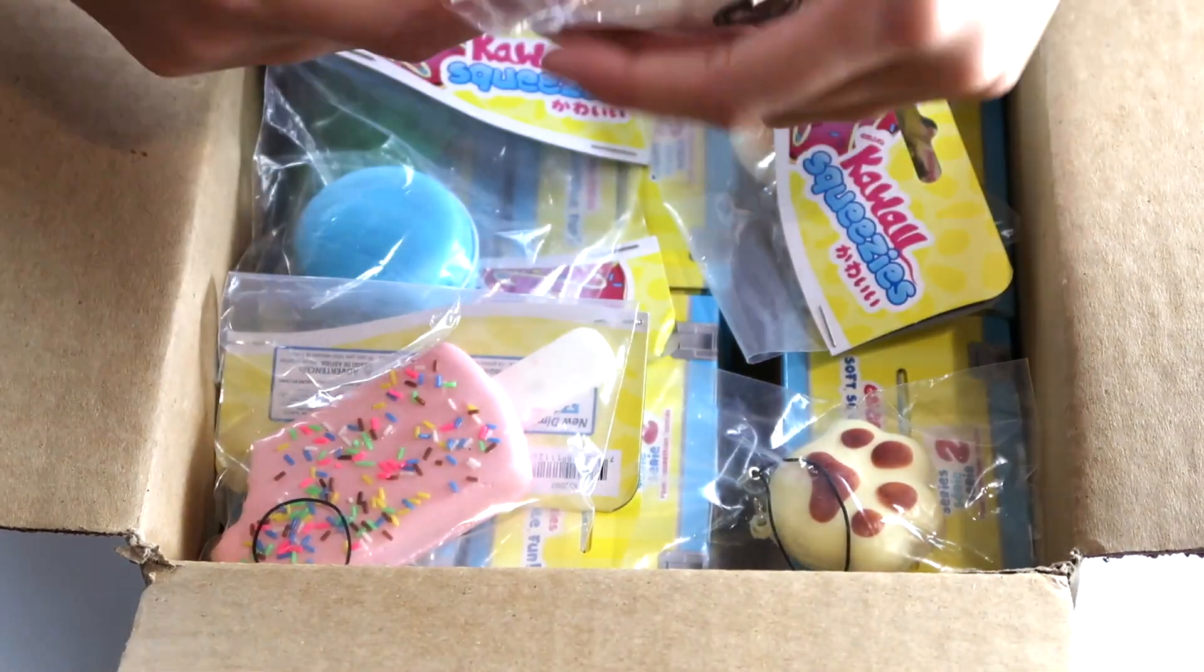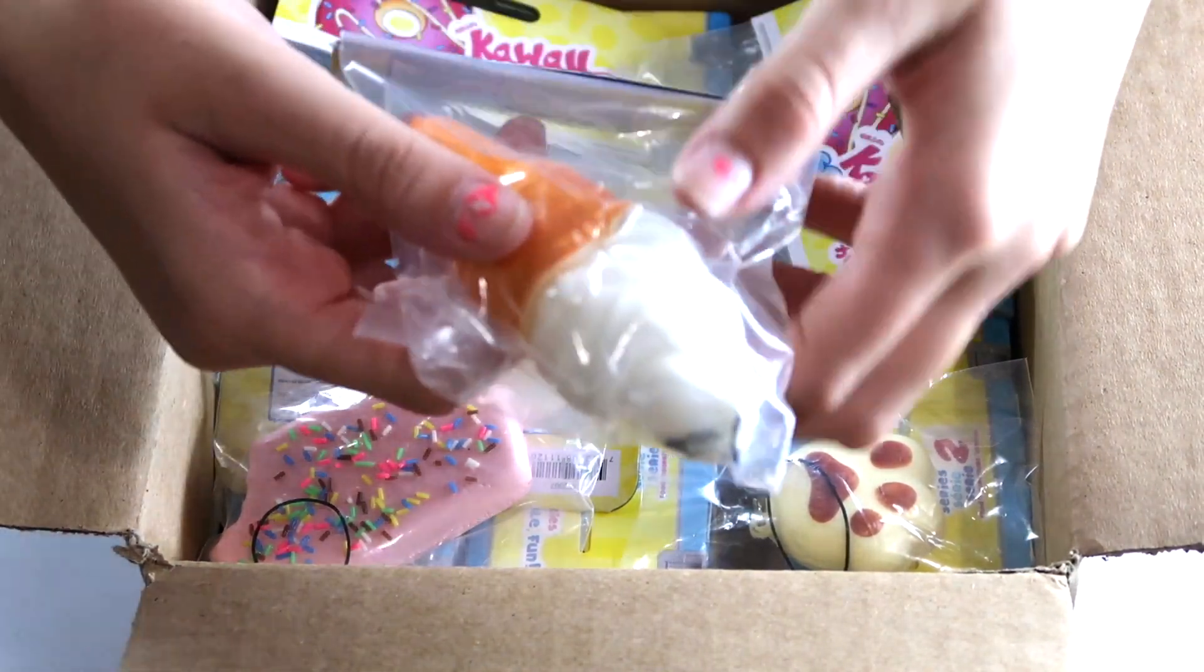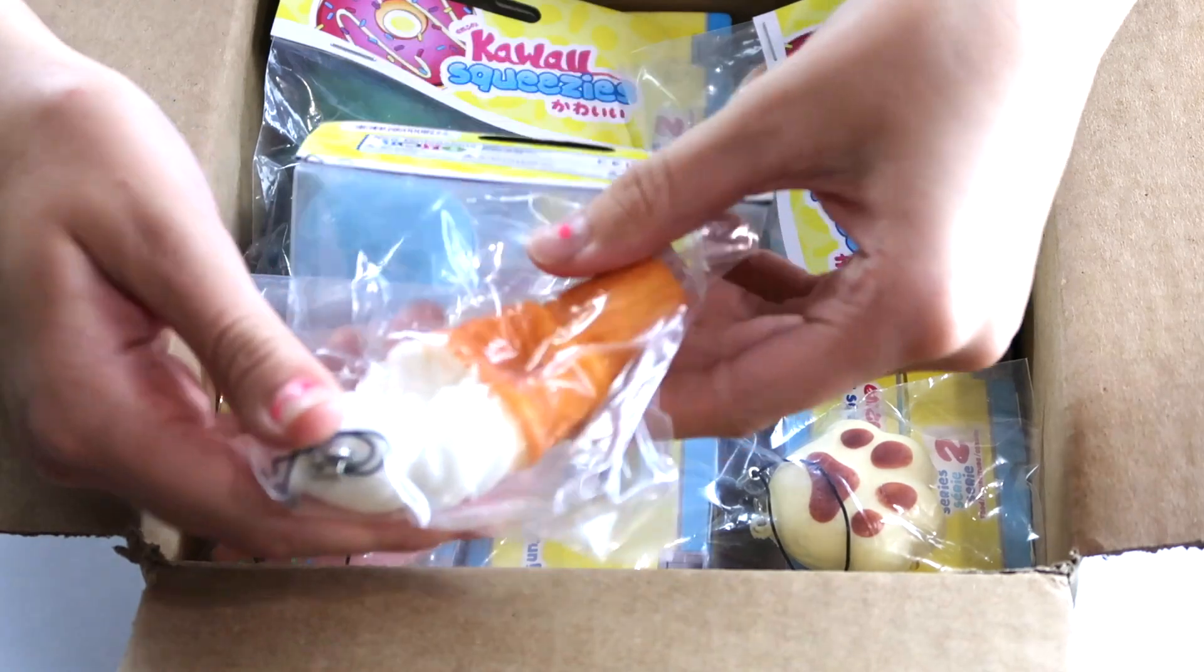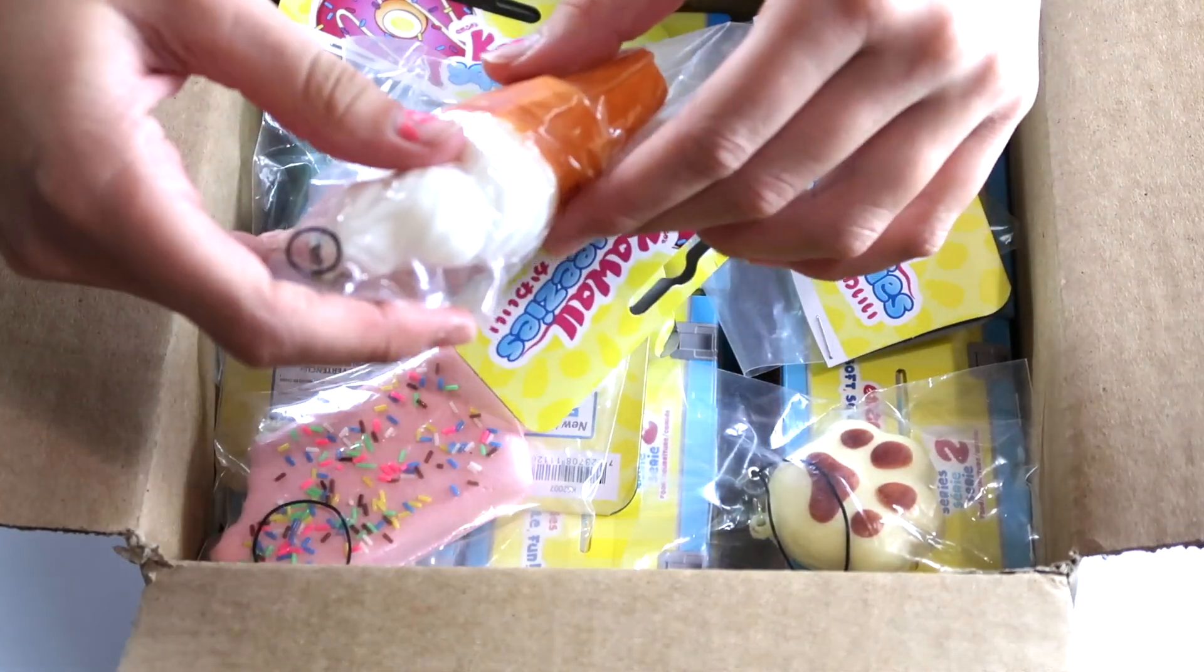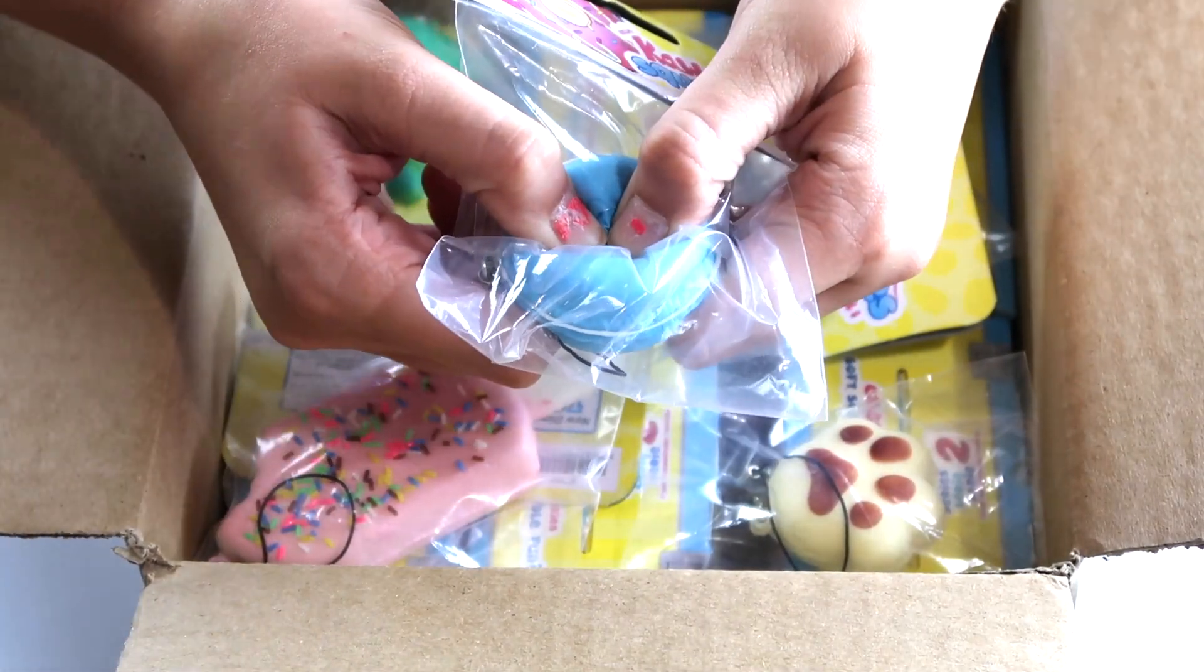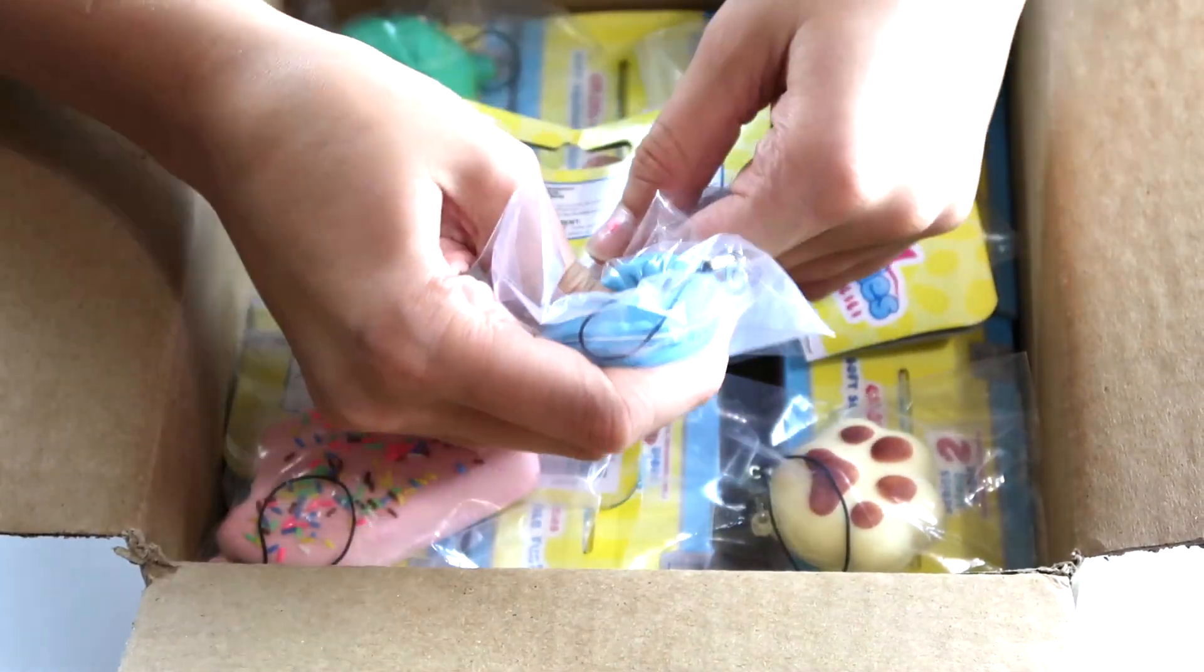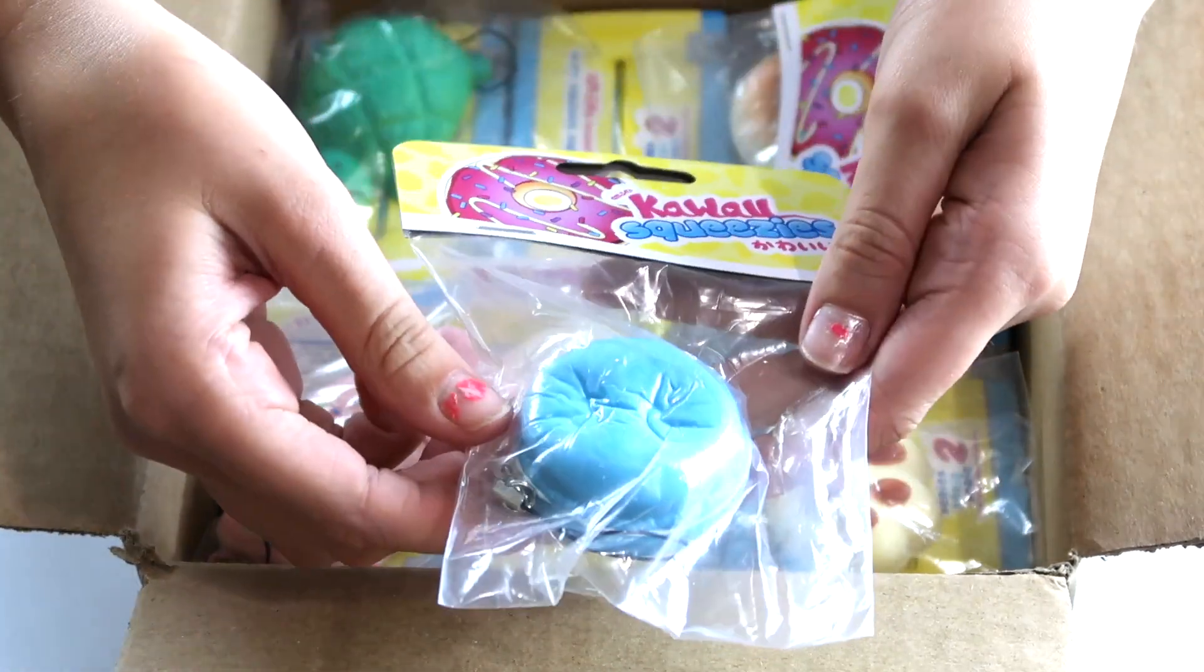But the first one out of the series 1 is a vanilla ice cream. They are super soft and slow rising, except these ones aren't blind boxes. These ones you can just see and choose which one you want, which is a good thing. But this one is super soft and slow rising. The next one is a macaron, macaroon, however you say it. And it's blue. I really like this one. The one that I bought a long time ago at Orient Express, one side was hard and one side was soft. But these are really soft, both sides.